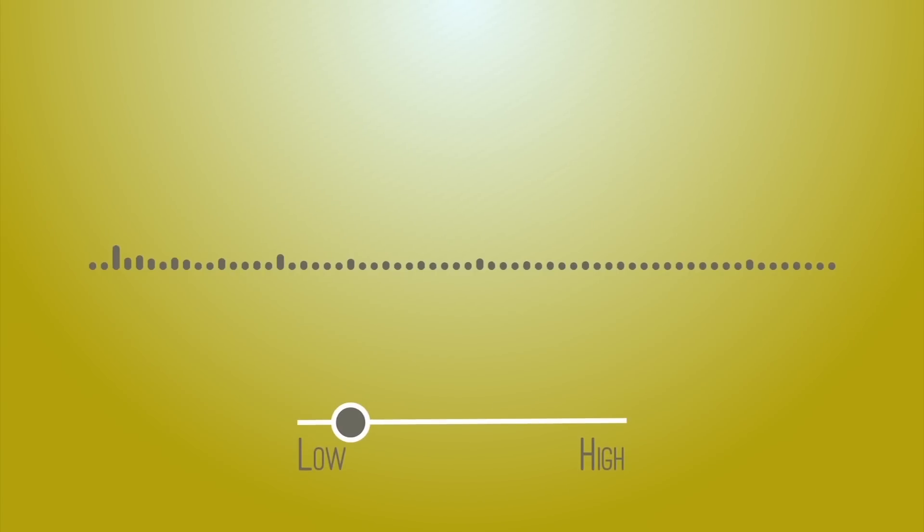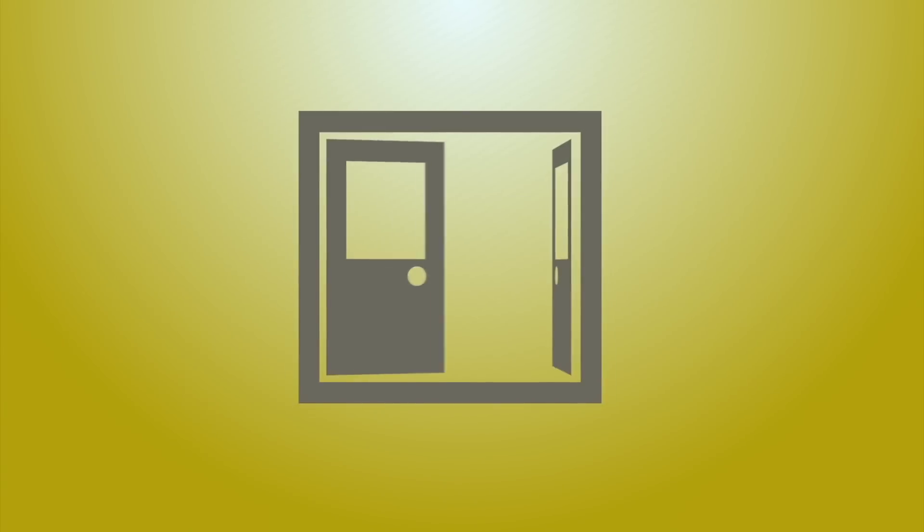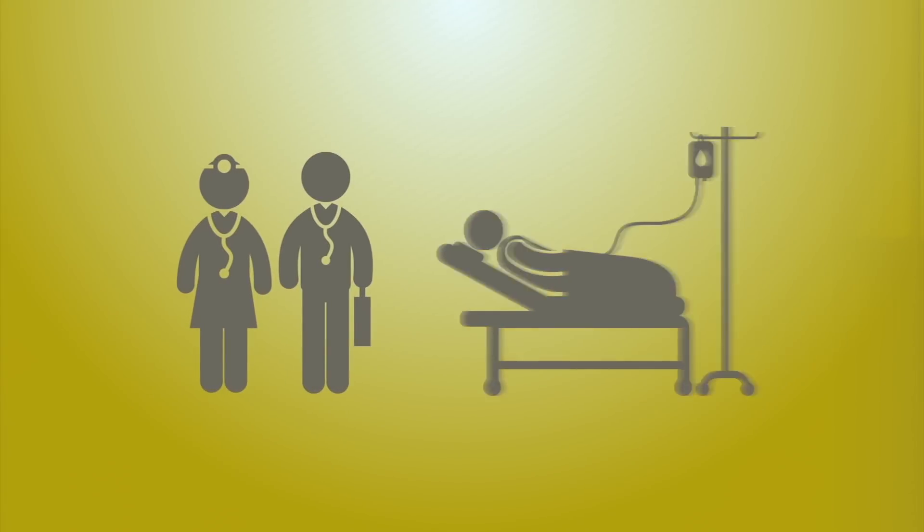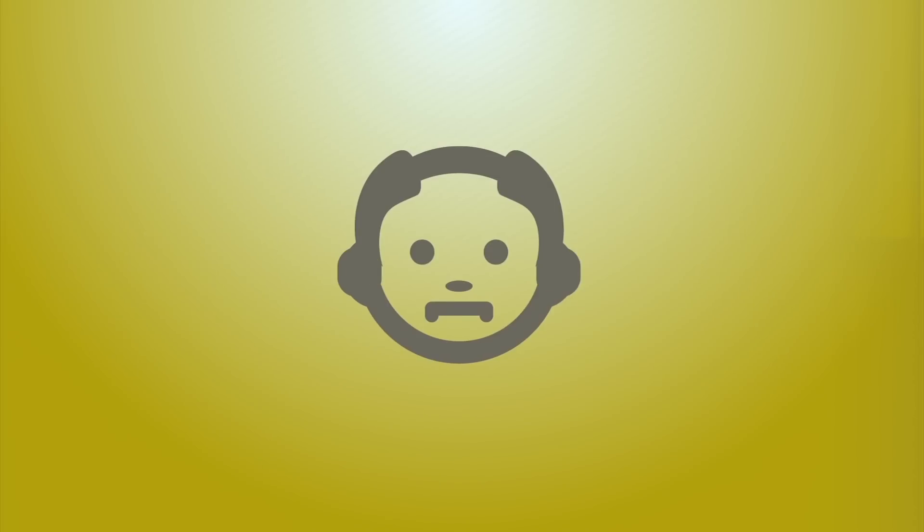Turn down the volume on bedside equipment, phones and bleeps, and make sure any noise is dealt with promptly. Close doors and bins quietly and ensure all conversations between staff are conducted away from the bedside. Offer earplugs to patients with RAS scores higher than minus 4.